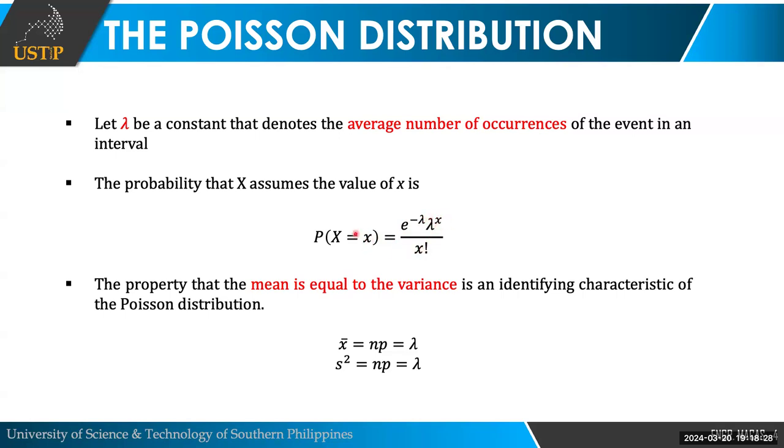That would be equal to e raised to the negative lambda multiplied by lambda raised to x over x factorial. Your x, of course, is the value of number of success. Lambda, how do you solve lambda? Lambda class is, aside from the fact that this is your average number of occurrences, it is also the value of your mean and variance sa Poisson distribution. This is another identifying characteristic of the Poisson distribution where your mean is equal to your variance. And, that is just simply equal to n times p. Just multiply your n, which is the population, multiplied to your probability of that event occurring, that is your lambda.